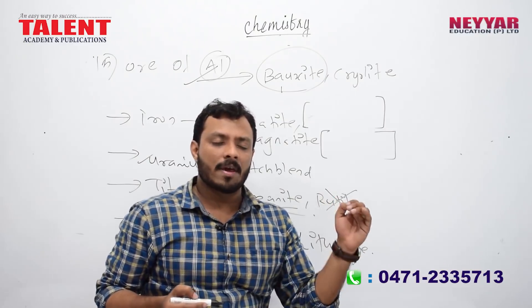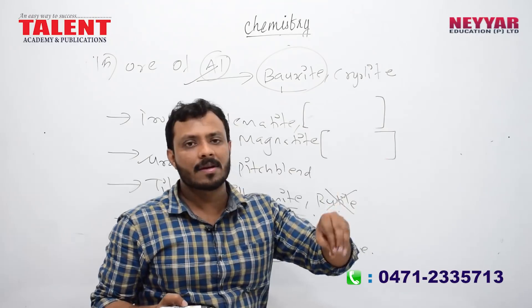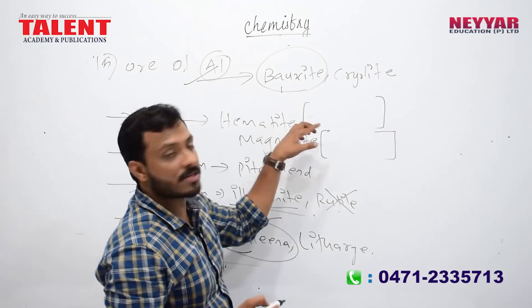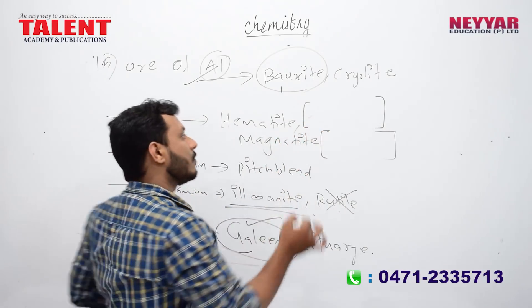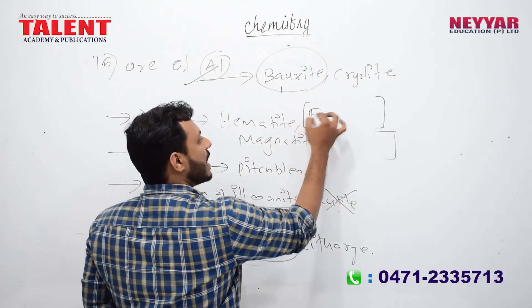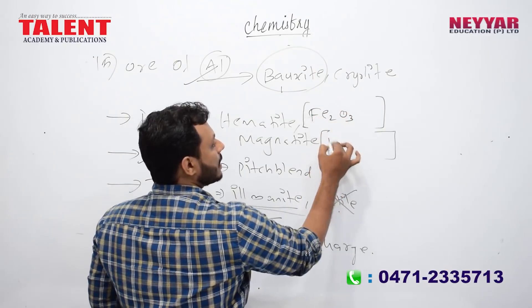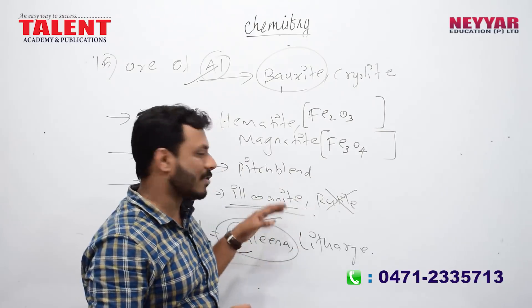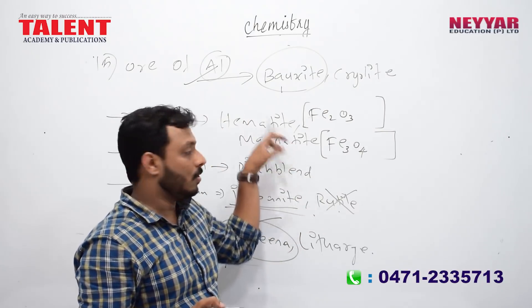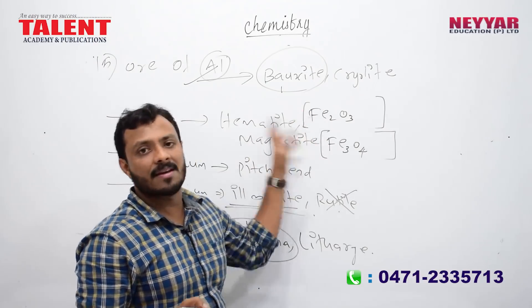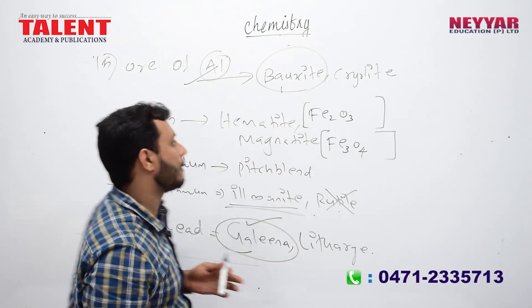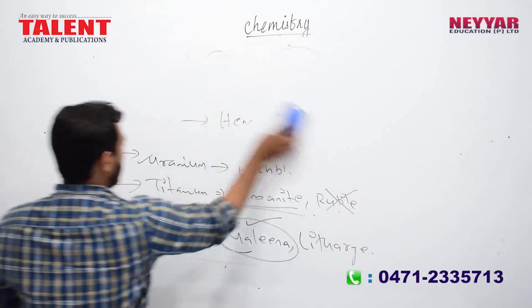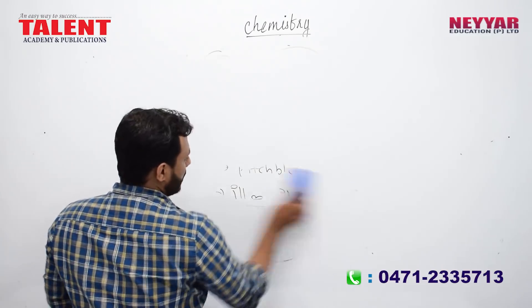Which of the following is the ore of iron? The options include Fe₂O₃ and Fe₃O₄. Fe₂O₃ is hematite and Fe₃O₄ is magnetite.